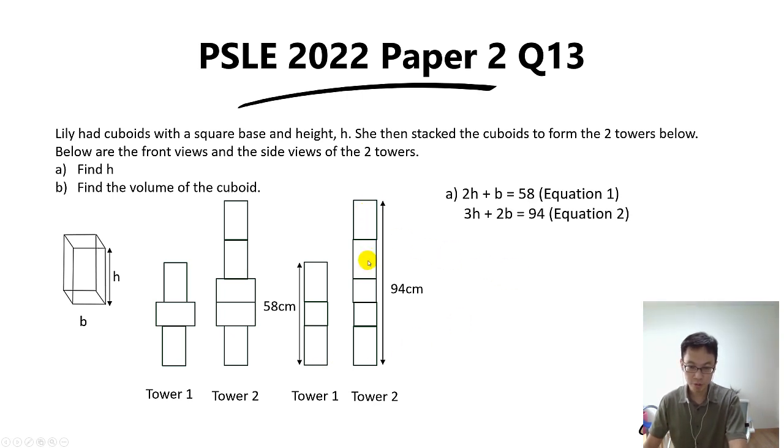And the second equation will be 3h because you got three heights over here, plus two breadths, which is 2b, equals to 94.